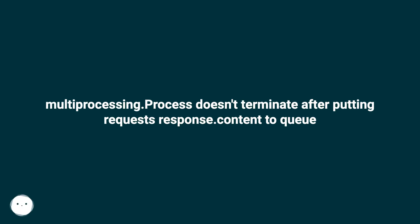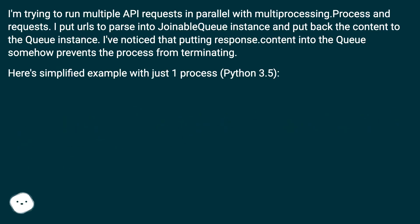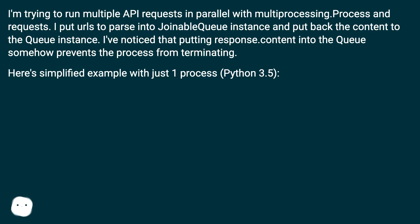multiprocessing.Process doesn't terminate after putting response.content to queue. I'm trying to run multiple API requests in parallel with multiprocessing.Process and requests. I put URLs to parse into a joinable queue instance and put back the content to the queue instance. I've noticed that putting response.content into the queue somehow prevents the process from terminating. Here's a simplified example with just one process — Python 3.5.